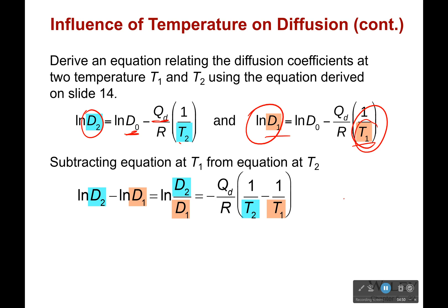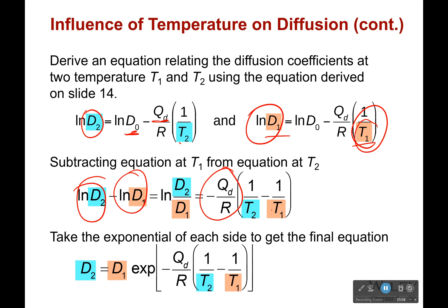So if I add both these equations together, what I get is log of one minus log of the other. It's going to be equal to negative Qd over R times the change in inverse temperature. And if I take the exponential of both sides, I can then get this equation that says my diffusion coefficient at T2 is equal to my diffusion coefficient at T1 times the exponential of the change in inverse temperature.